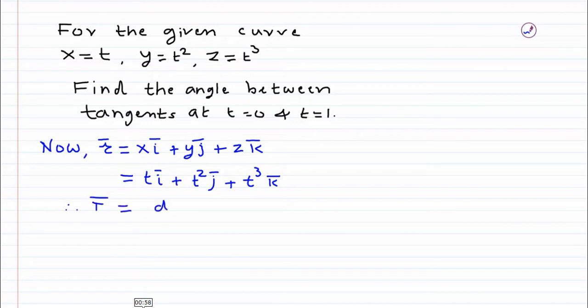Now tangent vector is nothing but the derivative of r bar, that is dr bar by dt. So this is d by dt or derivative of the r bar term, that is t i plus t square j plus t cube k.